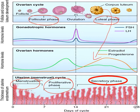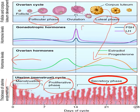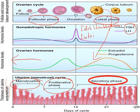During the secretory phase we see thickening of the endometrium. The hormone levels for estrogen and progesterone can be observed on the graph, along with FSH — follicle stimulating hormone — and LH — luteinizing hormone. These gonadotropic hormones will be discussed in the coming sessions.